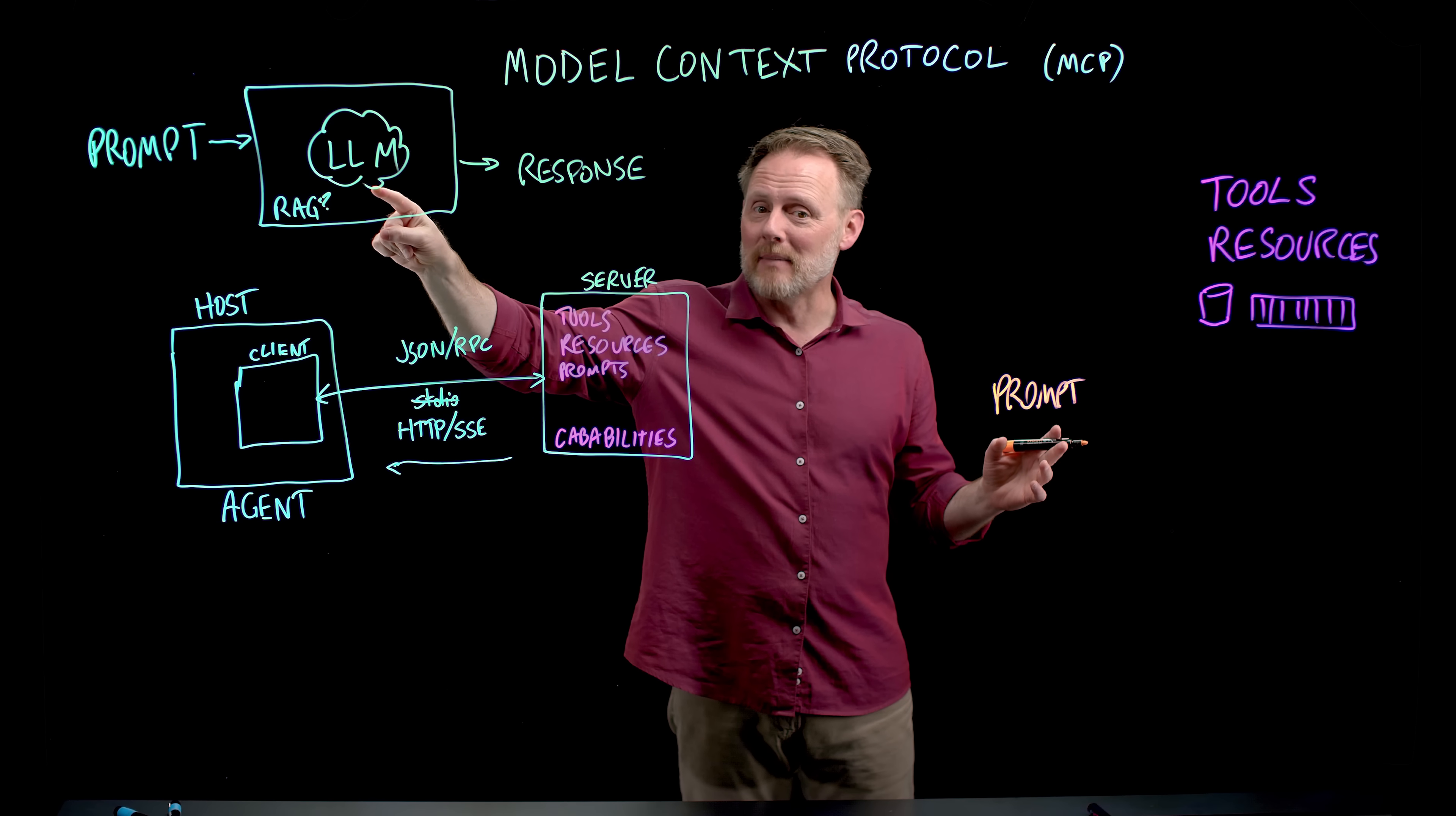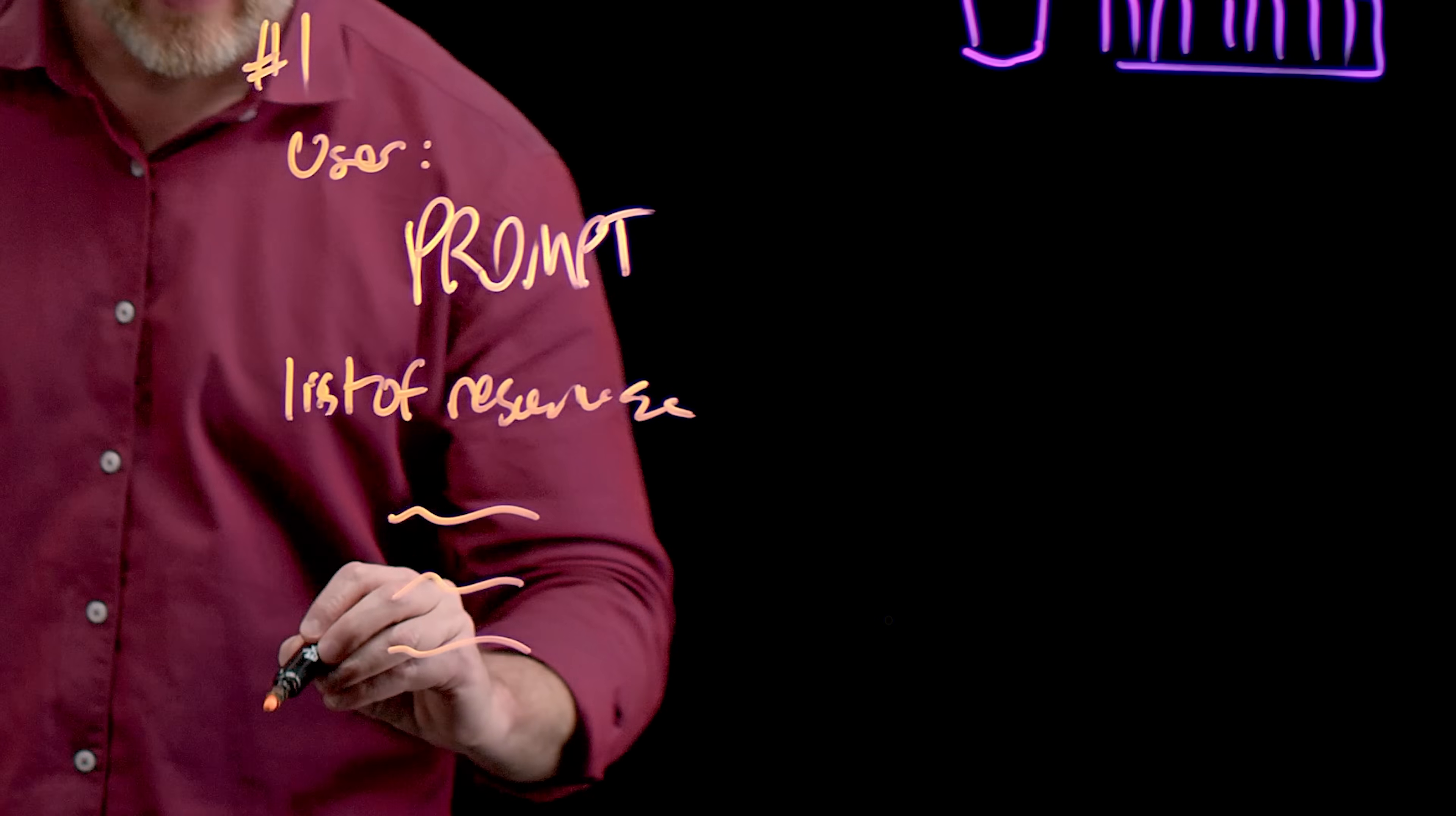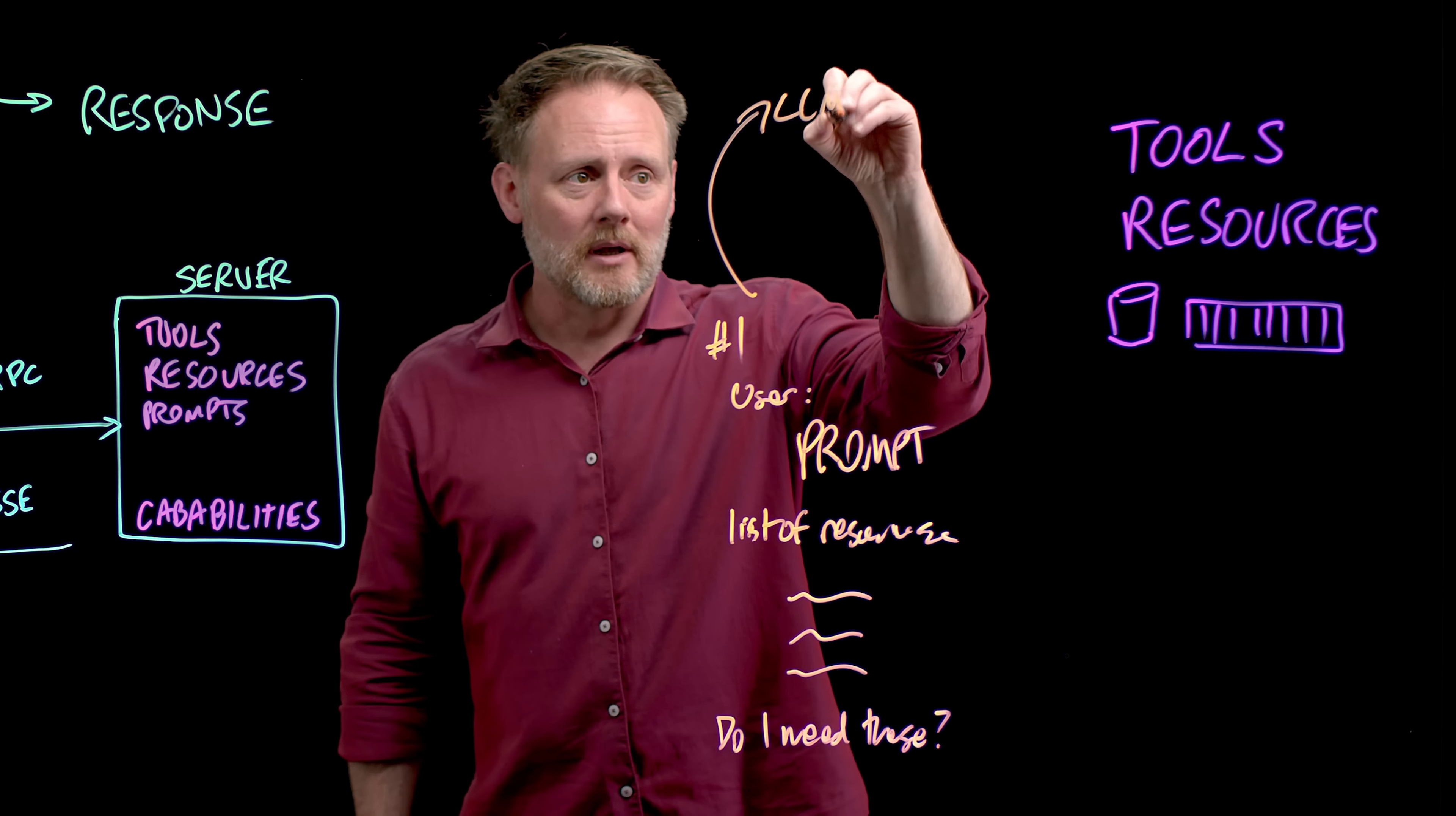But I can ask my model. I can say, you know what, on pass number one, I'll say, here is what my user said. Here is a list of resources, resource one, resource two, resource three. Do I need these? We are telling the LLM, I got this request. I have things like this. Do you think I should go get anything from them? We submit this as a prompt up to our LLM.